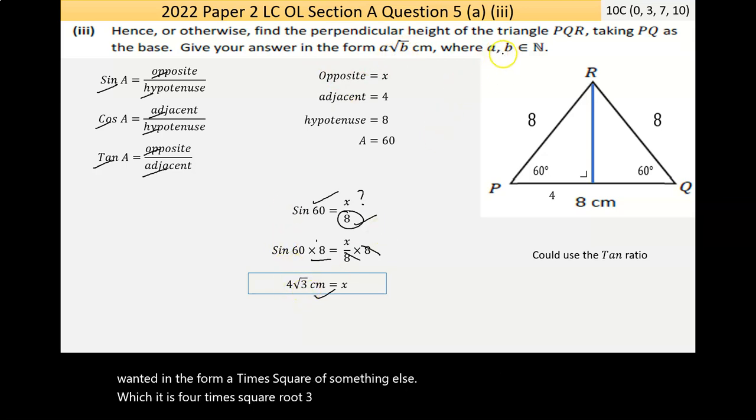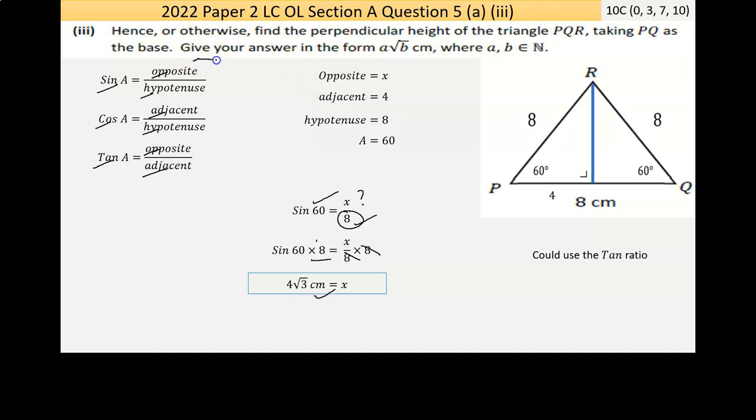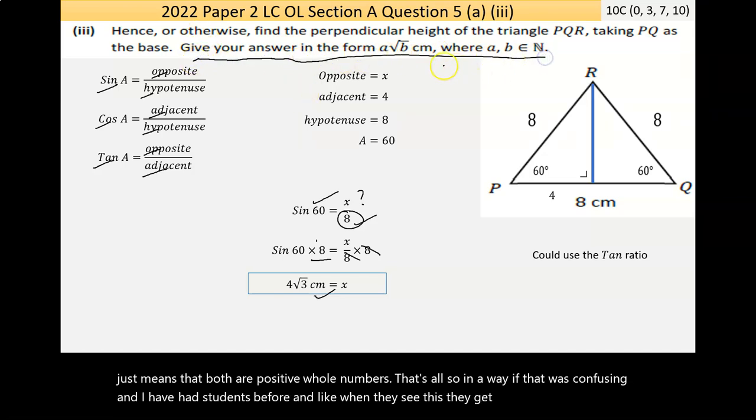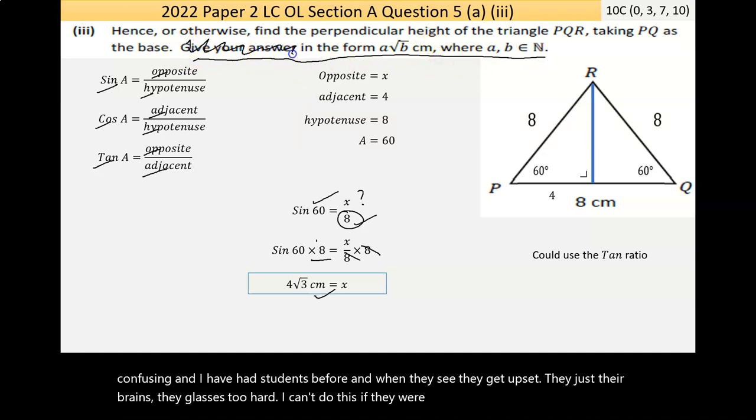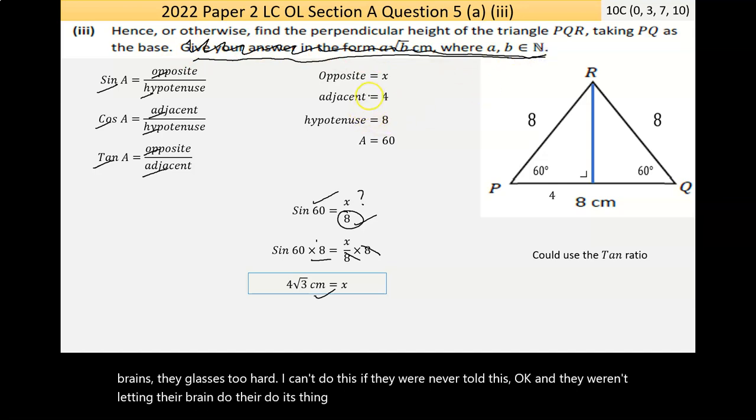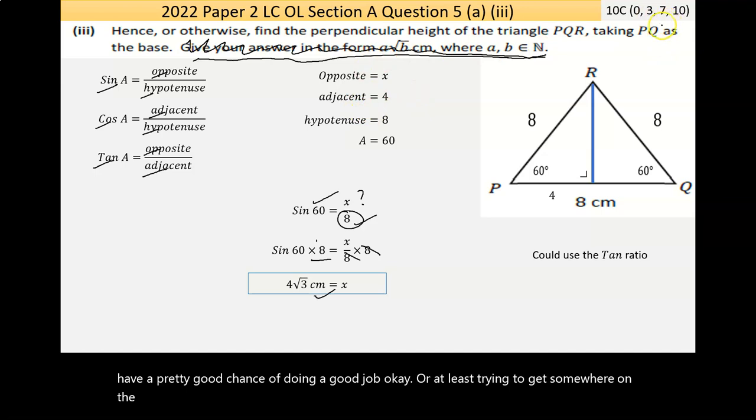So that ends up being, I got the 4 times the square root of 3. It's not an area, it's just a length. So it's 4 times the square root of 3, which again is just a number. It just looks weird. And that's the length of that side. And if the answer came in the form they wanted, they wanted in the form A times the square root of something else, which it is. It's 4 times the square root of 3. That thing there at the end where A and B are elements of N just means that both of them are positive whole numbers. That's all.